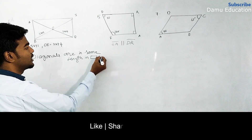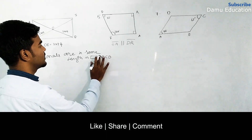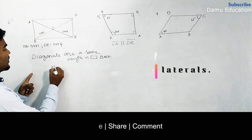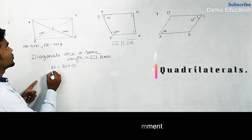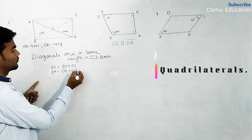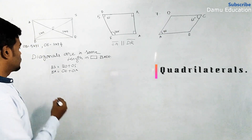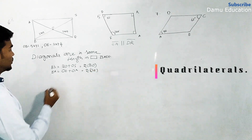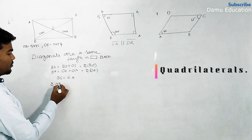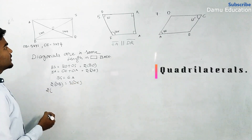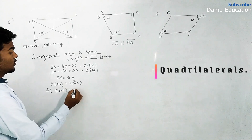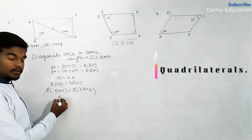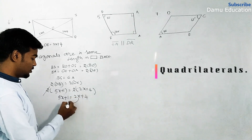In rectangle ABCD: BS equals BO plus OS, and EA equals OE plus OA. Since BO and OS are equal, we get BS = 2·BO, and EA = 2·OE. So BS = EA, meaning 2·(5x+1) = 2·(2x+4). The twos cancel, giving us 5x+1 = 2x+4.